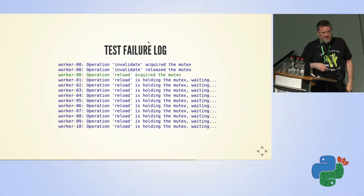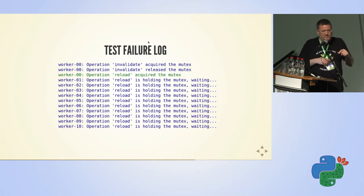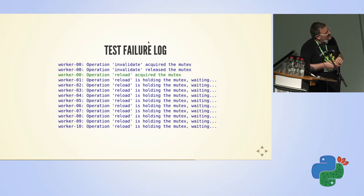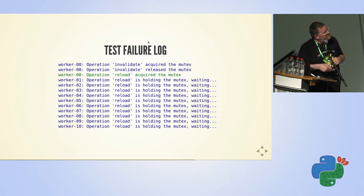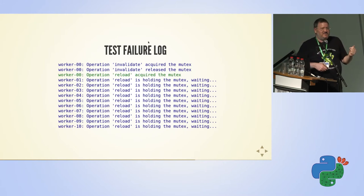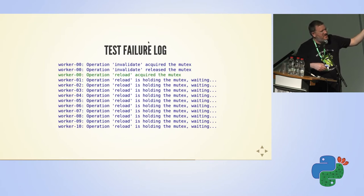Now let's look at the test log. If you remember, we had logging in the code. The log shows that the first worker took the mutex for the invalidate operation, which is expected. But then it took the same mutex for the reload operation, and all the other threads are waiting for the invalidate operation. So we don't have any concurrency — each time this happens, all the threads are waiting for the thread that got into the lock.